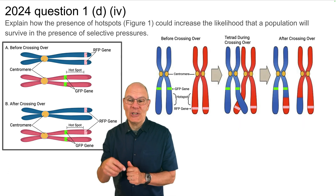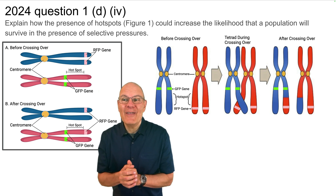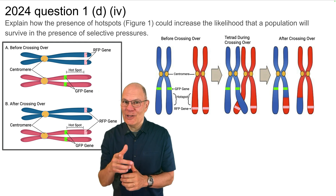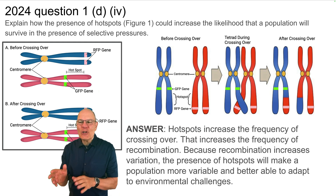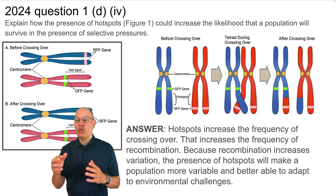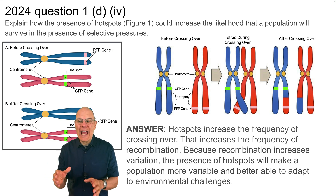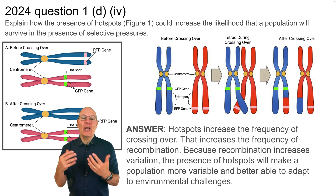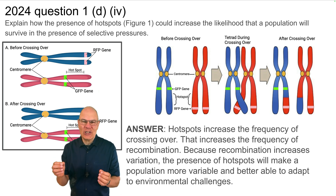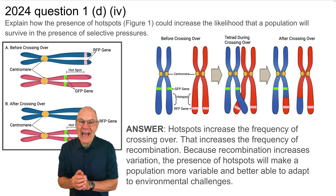Explain how the presence of hotspots shown in figure 1 could increase the likelihood that a population will survive in the presence of selective pressures. Hotspots increase the frequency of crossing over, which increases the frequency of recombination. Because recombination increases variation, the presence of hotspots will make a population more variable and better able to adapt to environmental challenges. Variation is the raw material for natural selection, and natural selection works better in a population that has more variation.